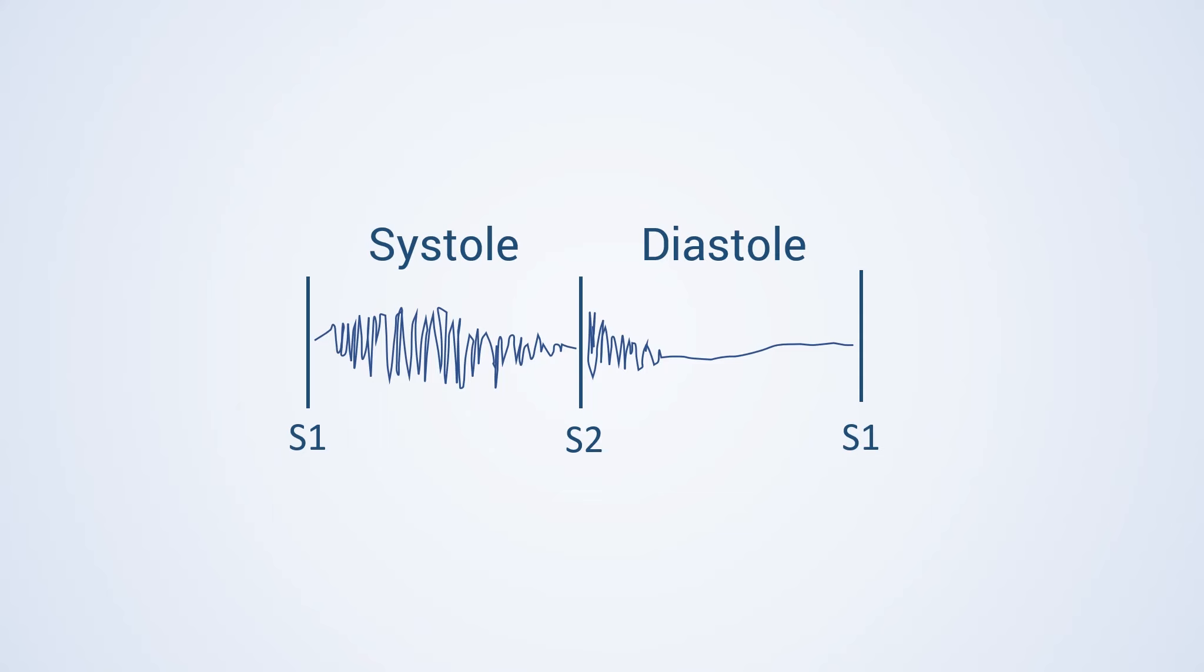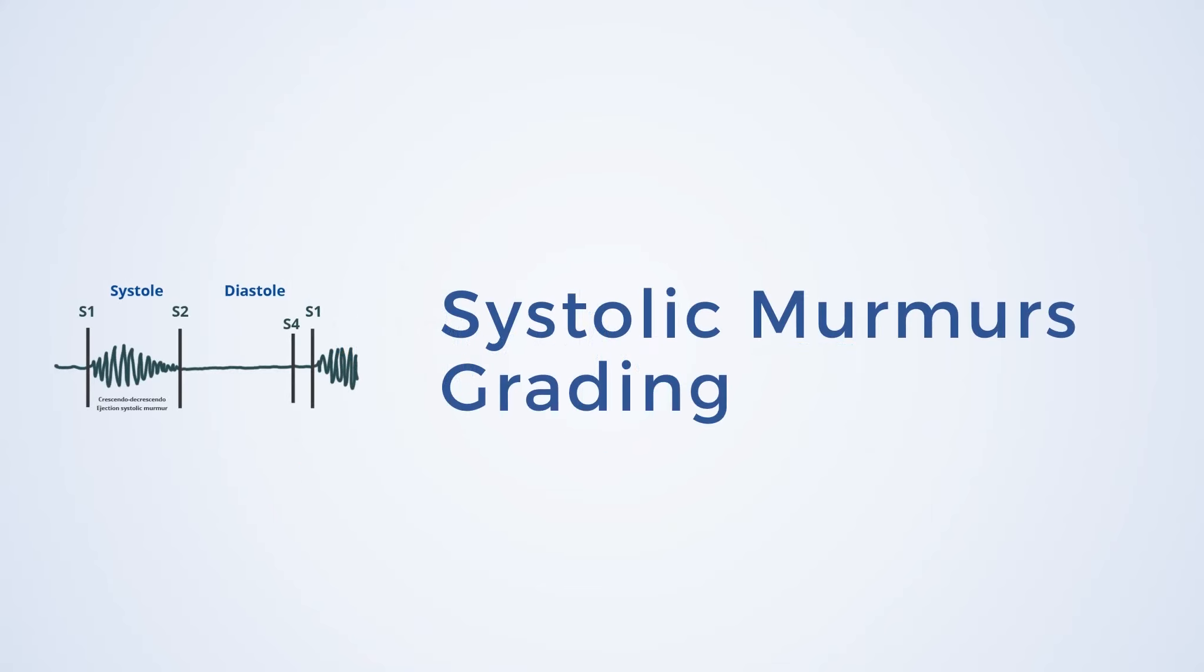Murmurs can be systolic, diastolic, or may occur in both phases. In this video, we will learn about the grading of systolic murmurs.